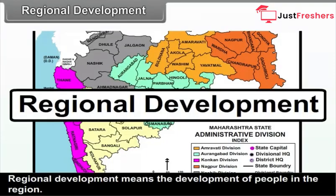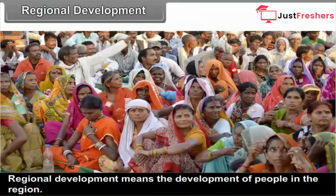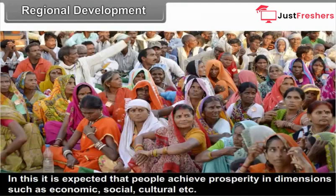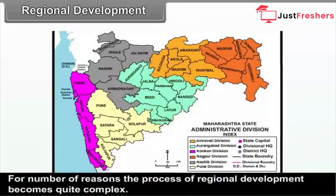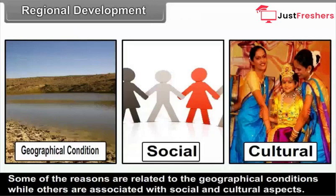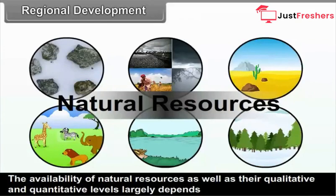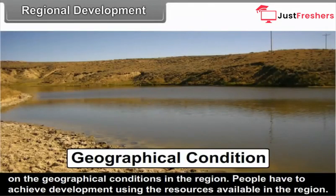Regional development means the development of people in the region. It is expected that people achieve prosperity in dimensions such as economic, social, cultural, etc. For a number of reasons, the process of regional development becomes quite complex. Some reasons are related to geographical conditions, while others are associated with social and cultural aspects. The availability of natural resources, as well as their qualitative and quantitative levels, largely depend on the geographical conditions in the region.